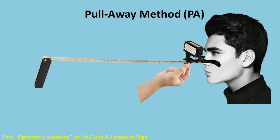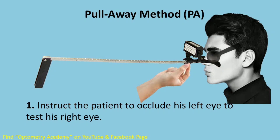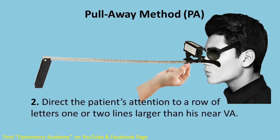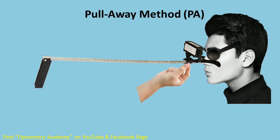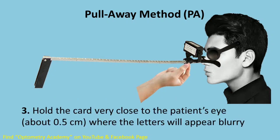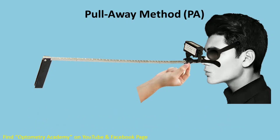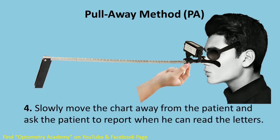Pull-away method: ask the patient to occlude his left eye to test his right eye. Direct the patient's attention to a row of letters one or two lines larger than his near visual acuity. Hold the card very close to the patient's eye — about 0.5 centimeters — where the letters will appear blurry. Slowly move the chart away from the patient and ask the patient to report when he can read the letters clearly.